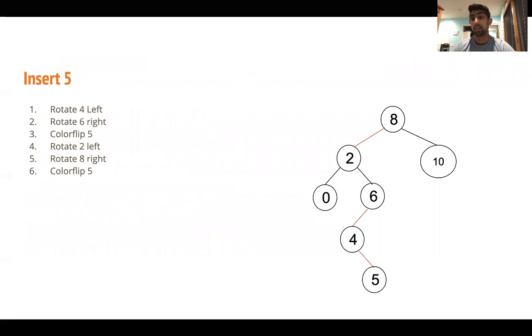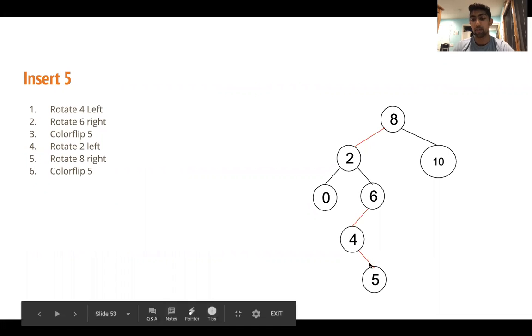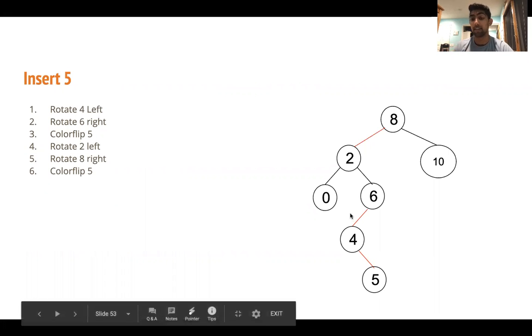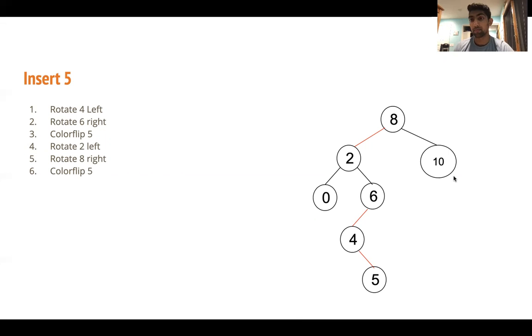So after inserting 5, this will actually take 6 fix-ups. And I'm going to quickly walk through an example of the 6 fix-ups that are needed and the ordering. So after inserting 5, what you guys should realize is that this 4-6 node now got a new element 5. I think it's really helpful to remember that this is just a 2-3 tree. An LLRB has an isomorphism with a 2-3 tree.